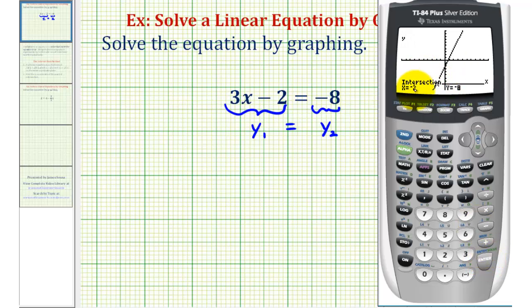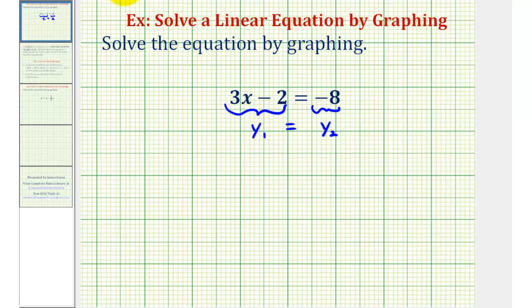So the point of intersection has coordinates negative 2, negative 8. So the x-coordinate of negative 2 is our solution. And this is the value of x where both sides of the equation are equal to negative 8. So our solution is x equals negative 2.